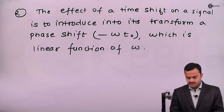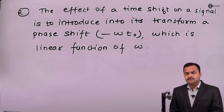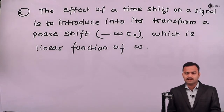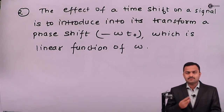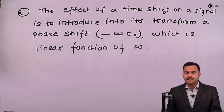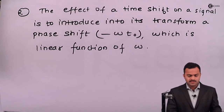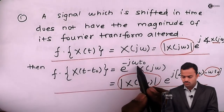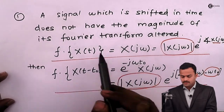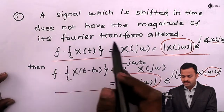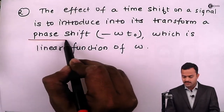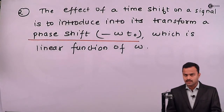So here we have seen two properties of a Fourier transform. The first is linearity, where whatever constant we multiply to the input side, and whenever we have an input as a linear combination of two different signals, the same will appear in the output as a Fourier transform. The second property is time shifting — whenever we have a shifting in x(t) in the time domain, we get an extra term e raised to minus jωt₀. Two observations: shifting the signal in time does not affect the magnitude of the Fourier transform, but there will be a change in phase, and an additional phase shift, which is a linear function of frequency omega, will get added. Thank you.